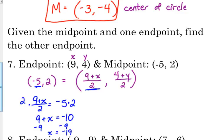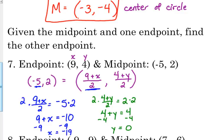We do the same thing for our y. 4 plus y over 2 is equal to 2. Multiply 2 on both sides: 4 plus y is equal to 4. Subtract 4 from both sides, so our y is equal to 0. Our other endpoint is negative 19, 0 — so our endpoint is somewhere on the x-axis at negative 19.